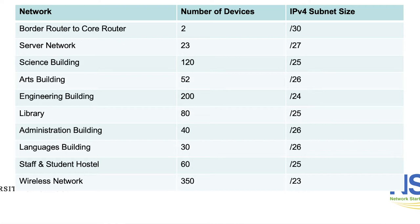For the server network you have 23 devices, which means you need a /27 for the subnet size. Remember that a /27 will give you 32 IP addresses and you can only have 30 usable addresses in that prefix. For this server network you are only allowed to add 7 additional devices in case it's needed in the future. So when you are planning, you also have to make room for devices that might be needed for that network in future.